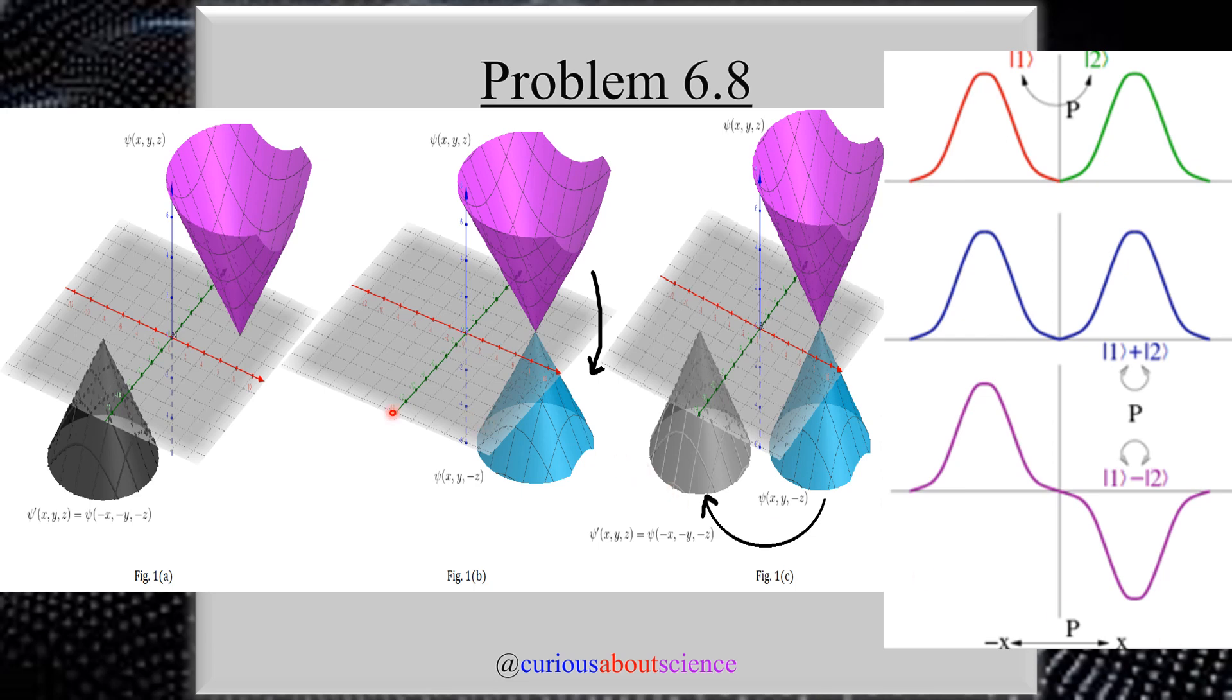As we see here, a couple questions ago we actually looked at the parity operator as a reflection. With this picture here, we have something pointing up in the XYZ plane and then it gets inverted over here. But this was also a composition of a mirror reflection and a rotation. That's a pretty cool picture to tie together what we saw last time.